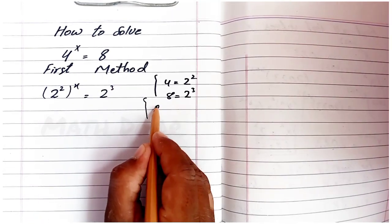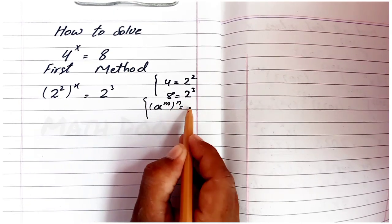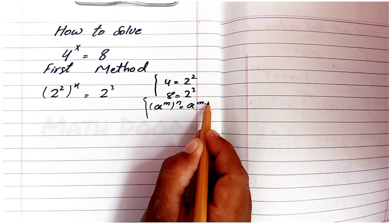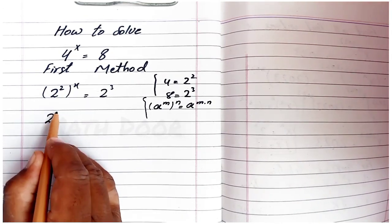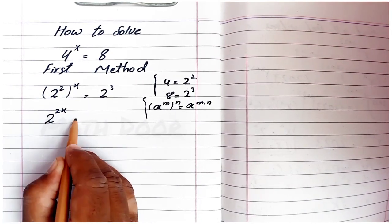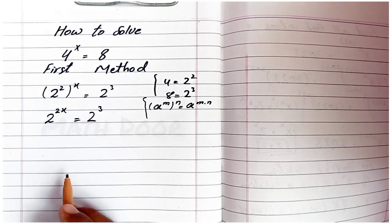We have a power rule: (a^m)^n = a^(m·n). So we write 2^(2x) = 2^3. We have another rule: